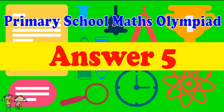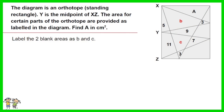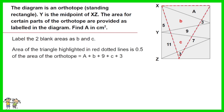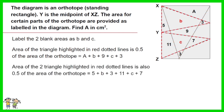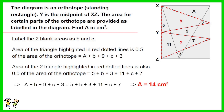Answer for Question 5. Label the two blank areas as B and C. The area of the triangle highlighted in red dotted lines is 0.5 of the area of the orthotope, equal to A plus B plus 9 plus C plus 3. The area of the two triangles highlighted in red dotted lines is also 0.5 of the orthotope, equal to 5 plus B plus 3 plus 11 plus C plus 7. Combining the two equations: A plus B plus 9 plus C plus 3 equals 5 plus B plus 3 plus 11 plus C plus 7. Working out the equation, the answer is A equals 14 cm².